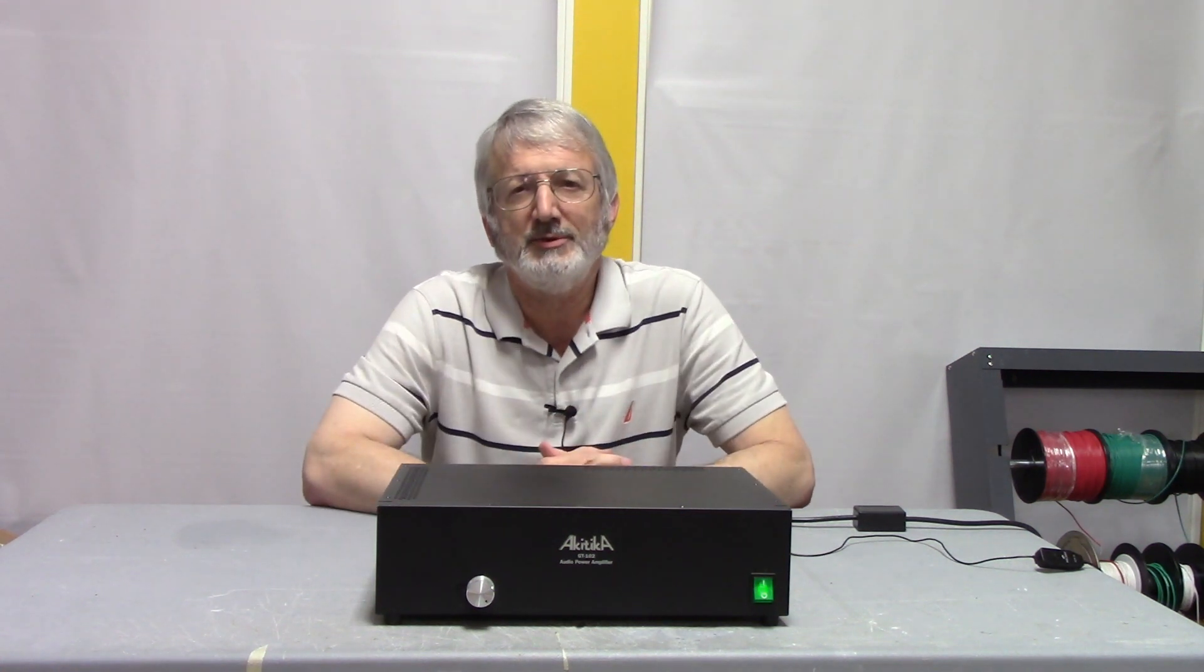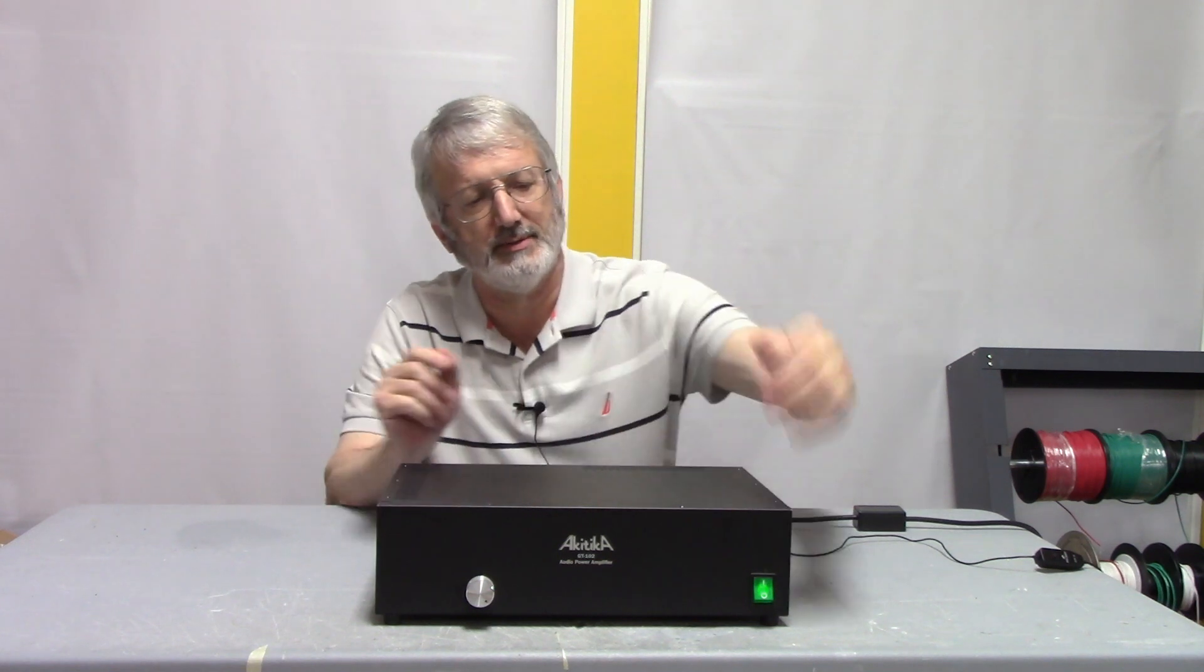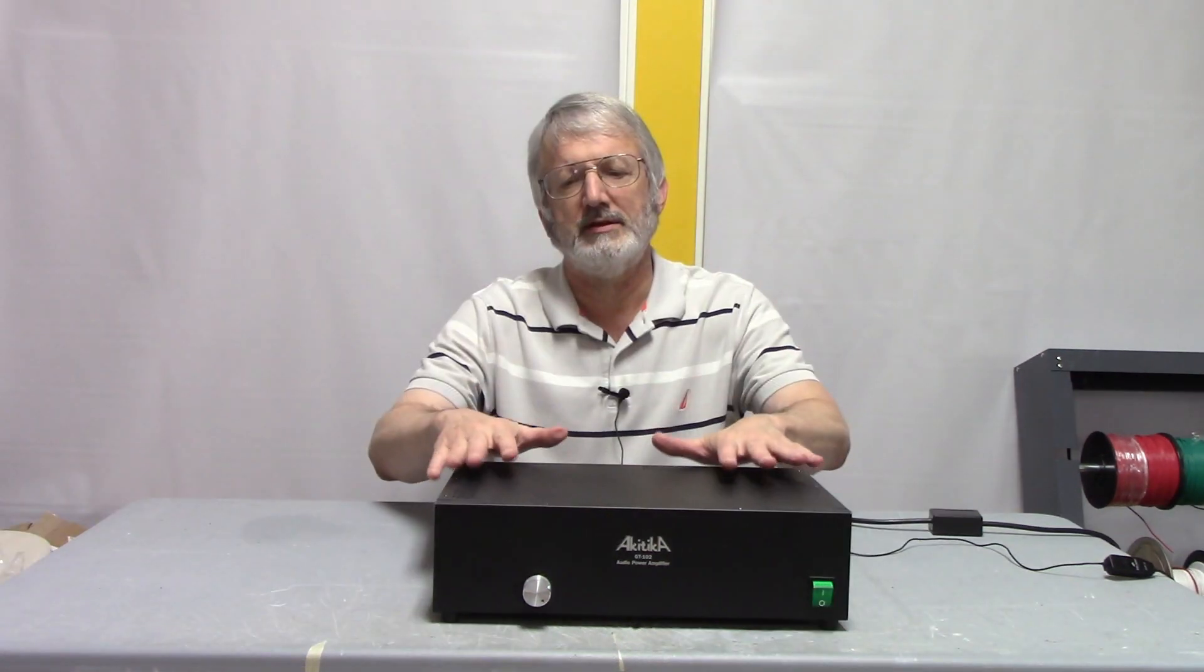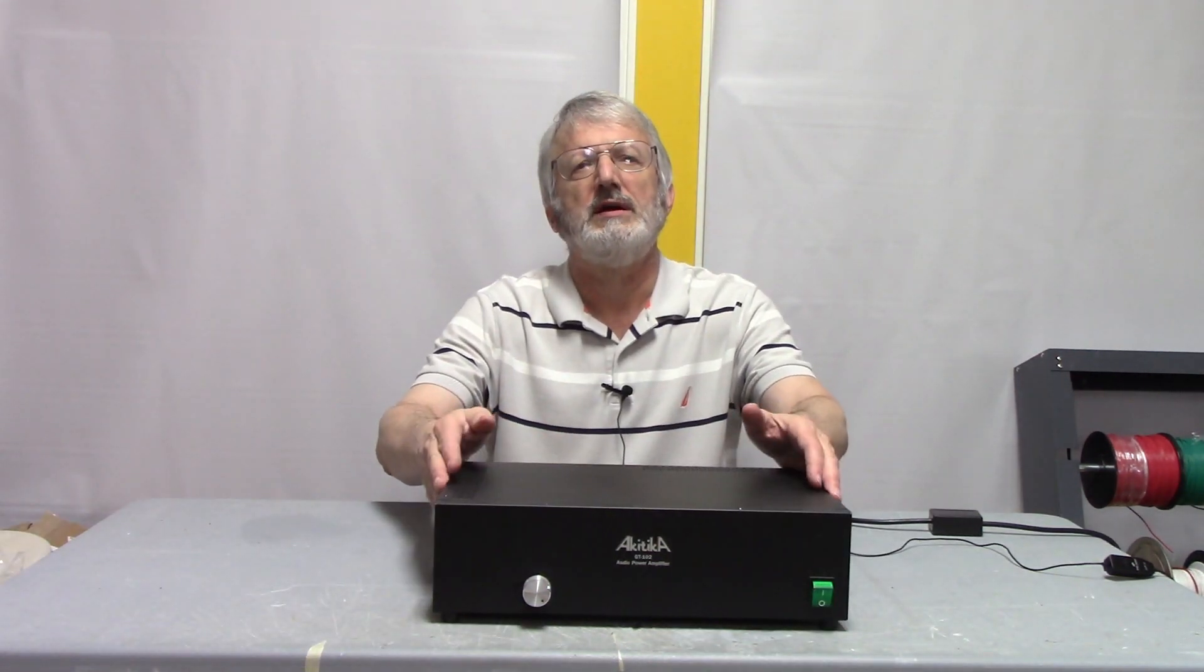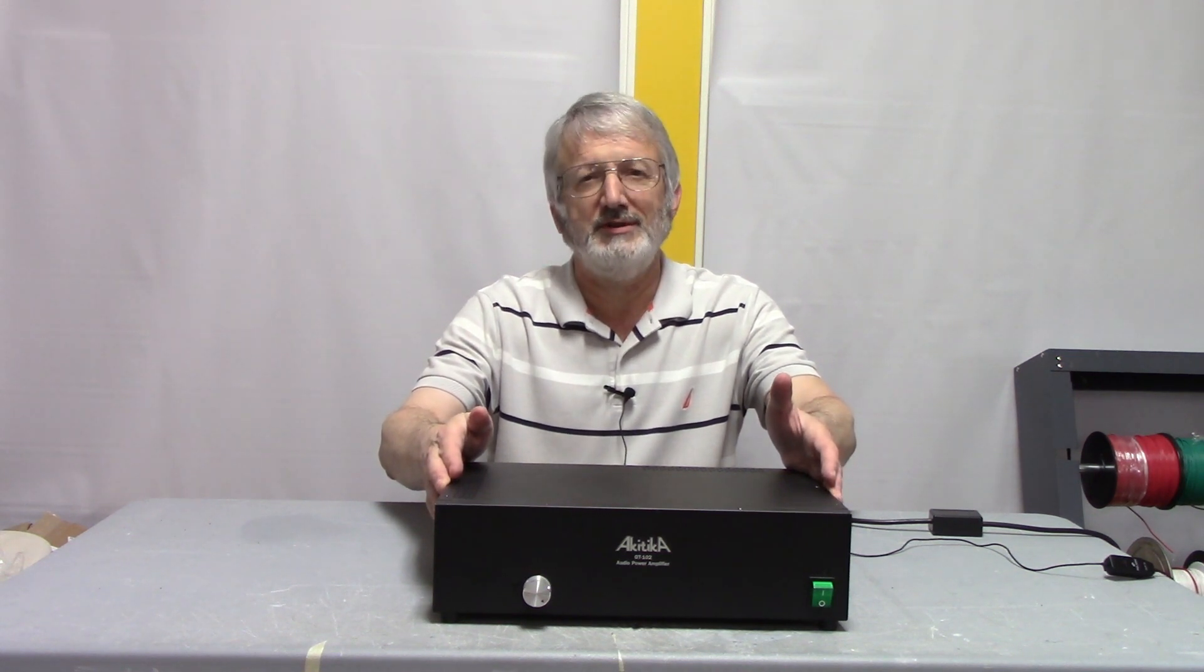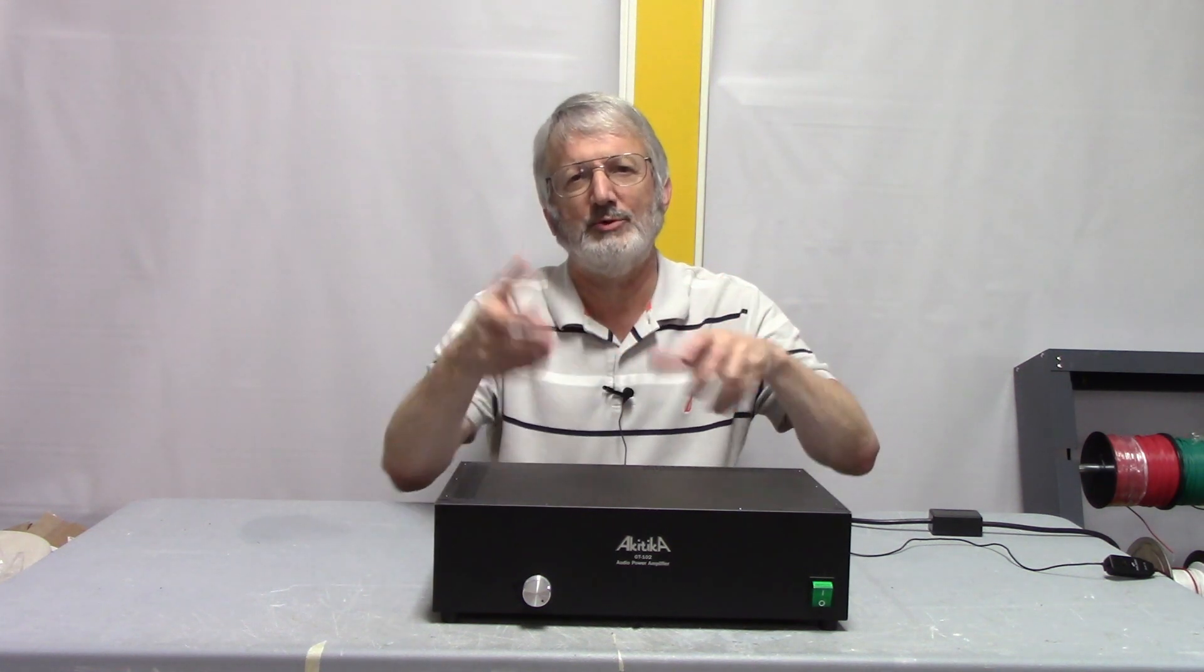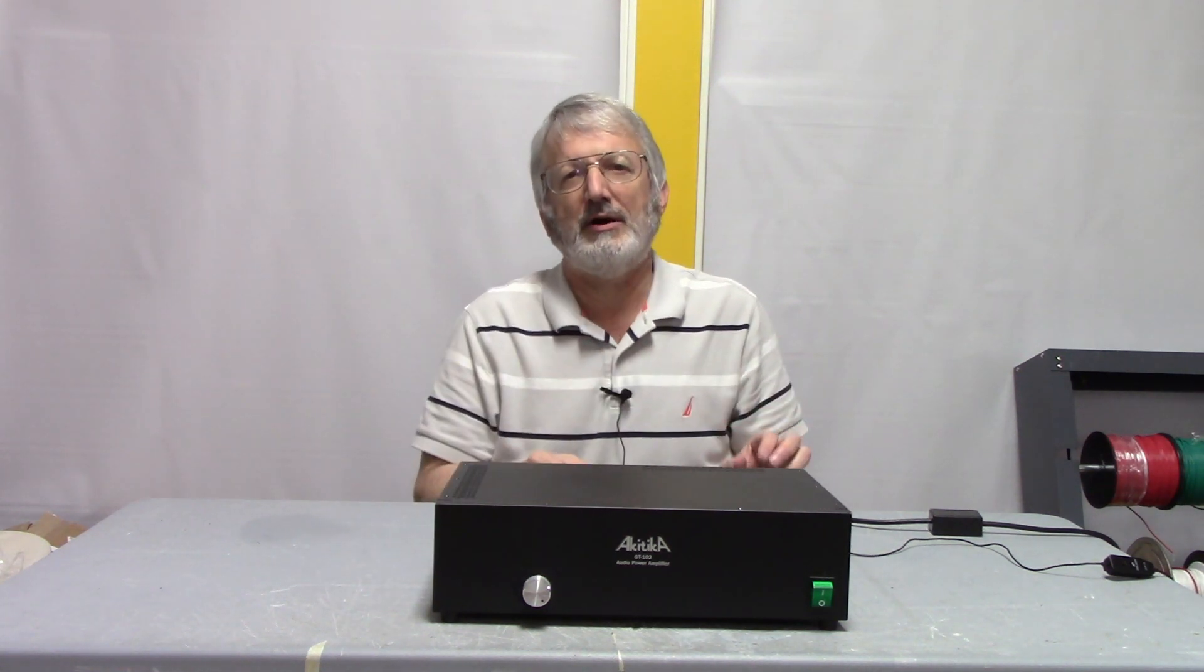So the asymmetry causes the toroidal transformer to hum. Let's see if we can do something about that. So we've taken the original GT102 and now we have installed into it what I call the DC scraper. And what it does is it removes the DC component, that which makes the input power asymmetric.